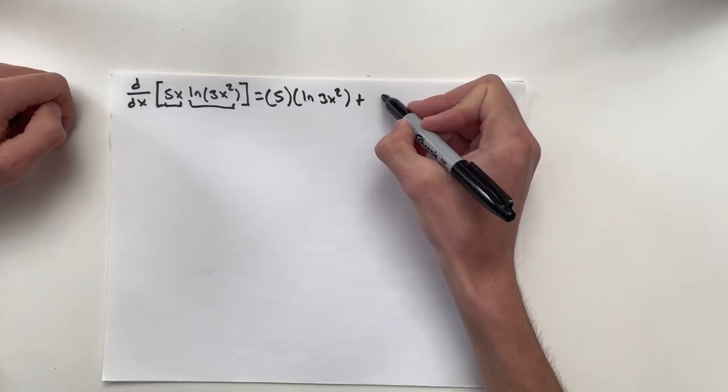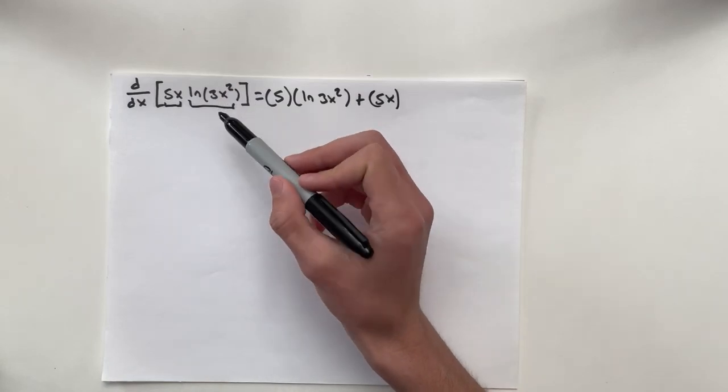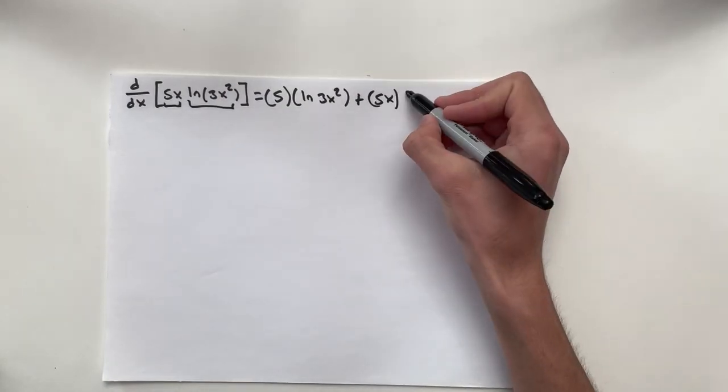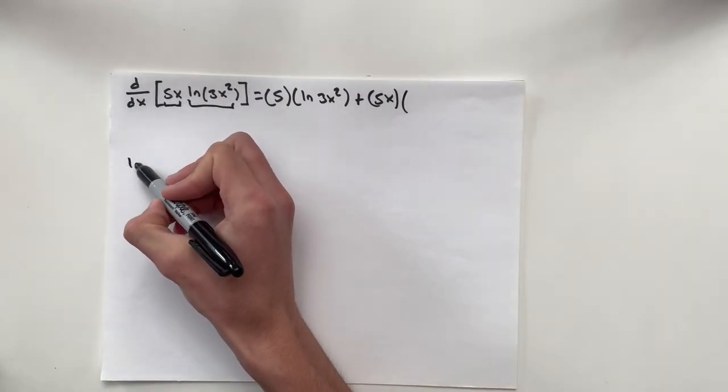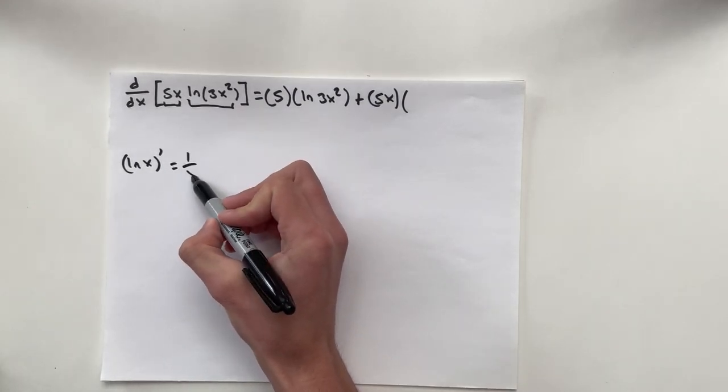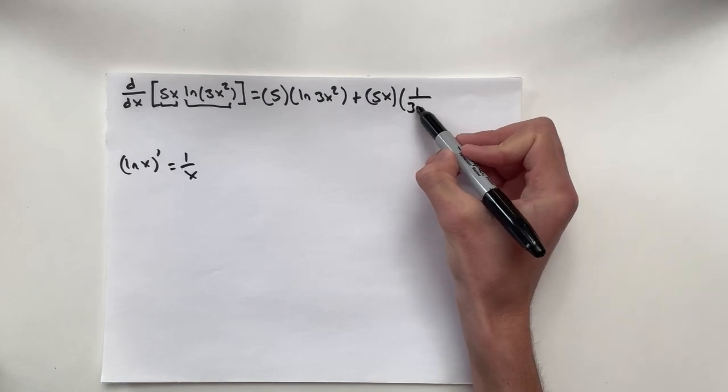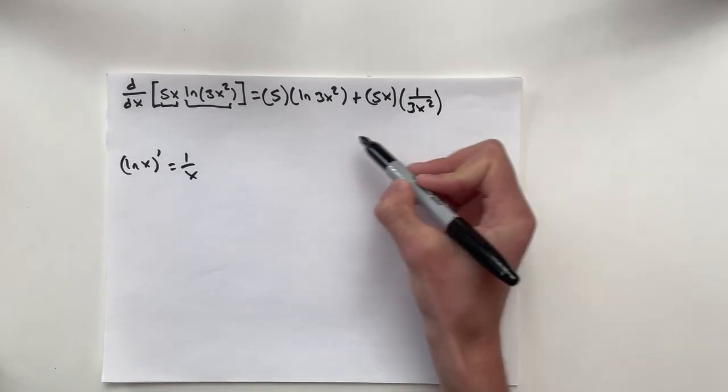Plus 5x, now the derivative of natural log 3x squared. The derivative of natural log is simply 1 over x. So we know that this is going to be 1 over 3x squared, but we're not done yet.